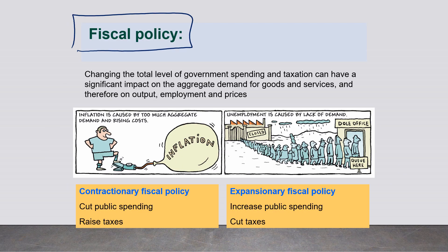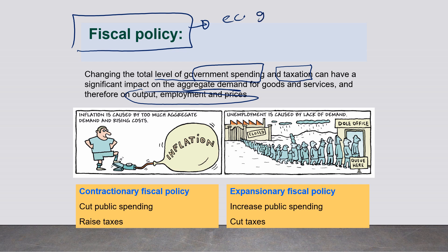Changing the total level of government spending and taxation can have a significant impact on aggregate demand for goods and services, and therefore on output, employment, and prices. Governments mainly use fiscal policy in order to achieve economic growth, increase employment, or fight inflation.